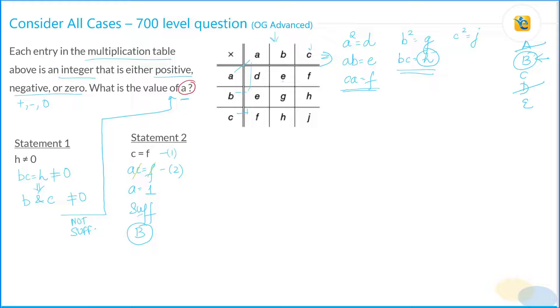Which means that this is sufficient, which means that the correct answer is choice B. You'll arrive at B as the correct answer.